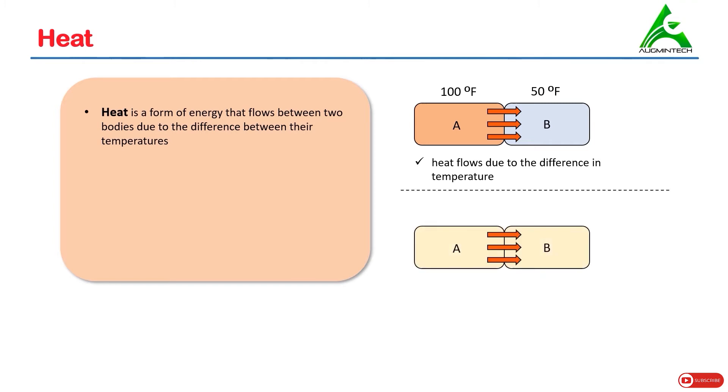As the heat keeps on flowing, the temperature of the body which releases heat decreases and the temperature of the body that receives heat increases. There will come a time when temperature of both bodies becomes same, let's say 70 degrees Fahrenheit in this case.